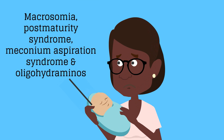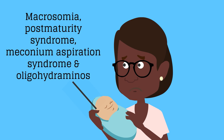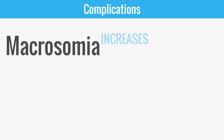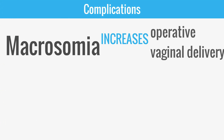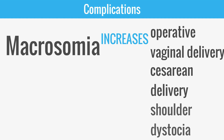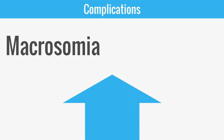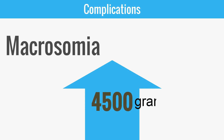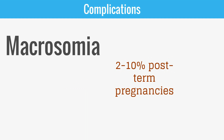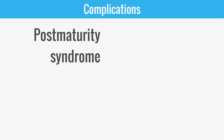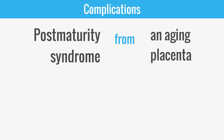Macrosomia increases the risk of operative vaginal delivery, cesarean delivery, and shoulder dystocia. Macrosomia is defined as an infant greater than 4,500 grams, and it occurs in 2-10% of post-term pregnancies.